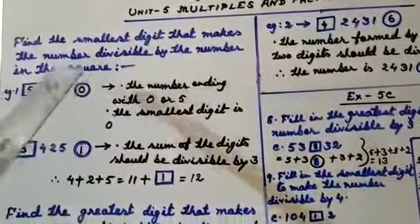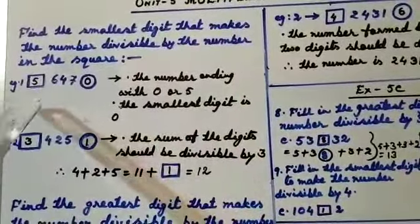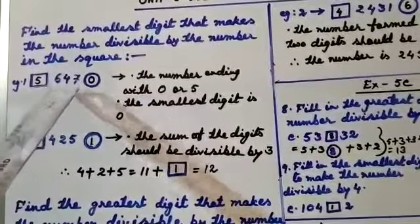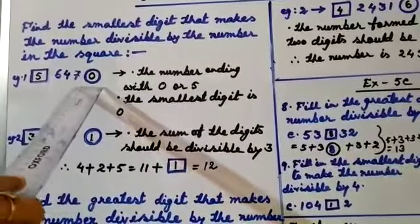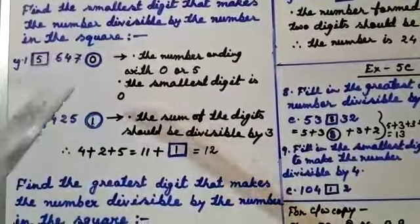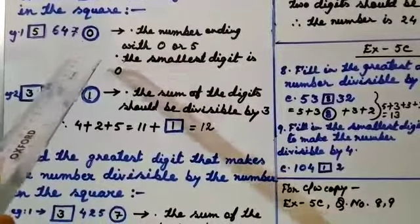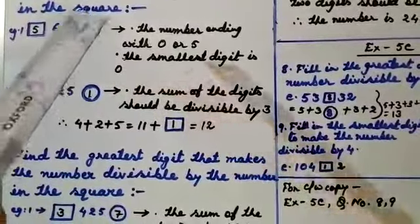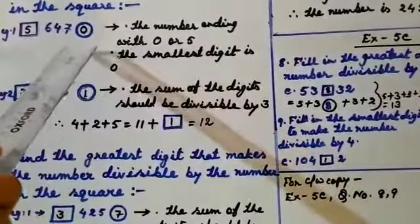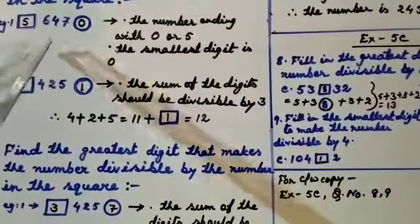Find the smallest digit that makes the number divisible by the number in the square. Here the number in the square is 5, and the number to be made divisible is 647, with the last digit missing. To be divisible by 5, the number should end with 0 or 5. The smallest digit is 0, so you write 0 here. Now the number is 6470, which is divisible by 5.